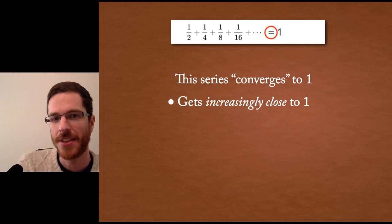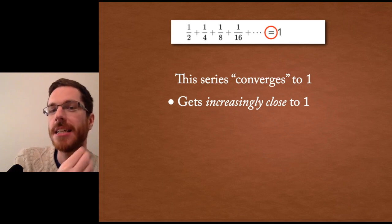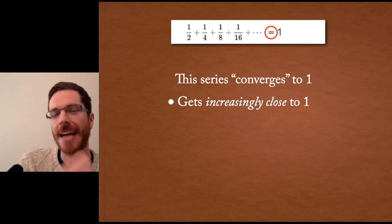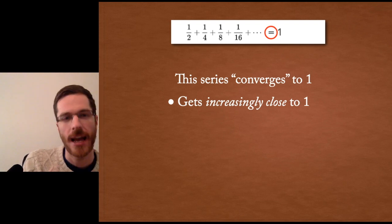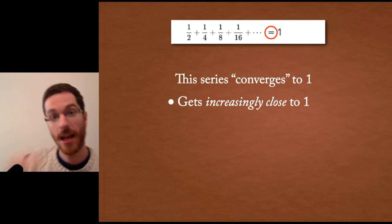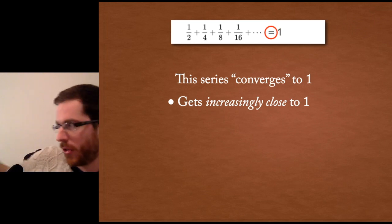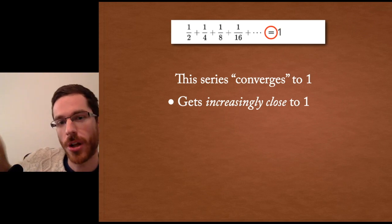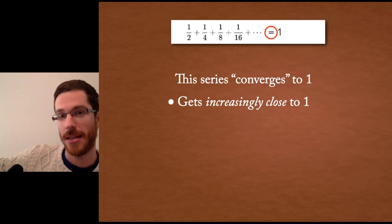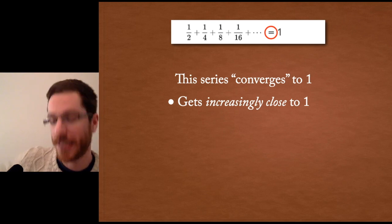You could describe it as saying the series gets increasingly close to one. As you add up a half and then a half of the previous term and a half of the previous term, so you go a half, a quarter, an eighth, a sixteenth, a thirty-second, and so on, the farther you go, the closer the sum will be to one, increasingly close.